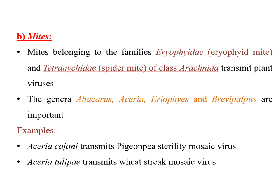Mites: mites belonging to the families Eriophyidae and Tetranychidae of the class Arachnida can transmit plant viruses. Important genera include Abacarus, Aceria, Eriophyes, and Brevipalpus. Examples: Aceria cajani transmits pigeonpea sterility mosaic virus, and Aceria tulipae transmits wheat streak mosaic virus.